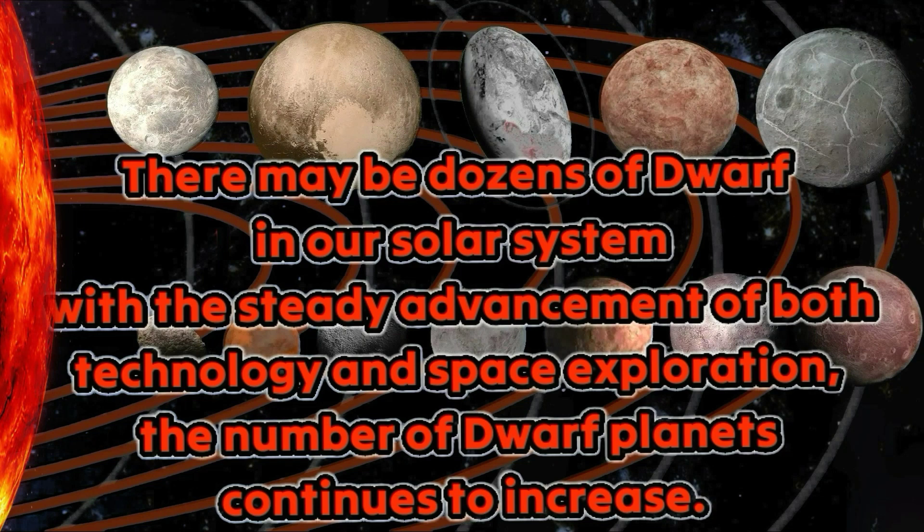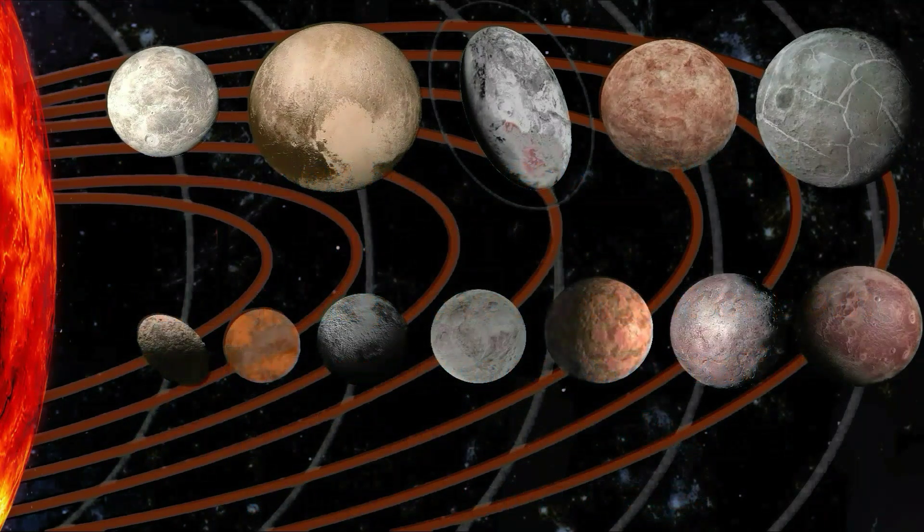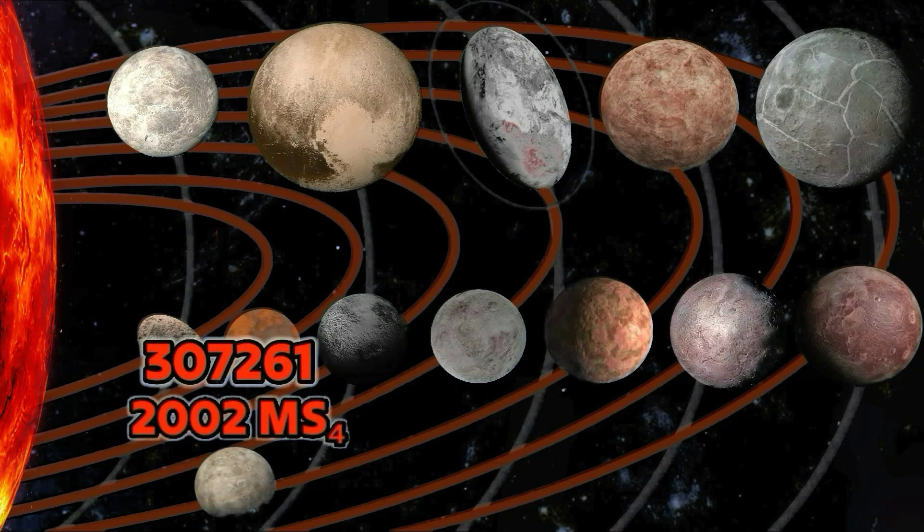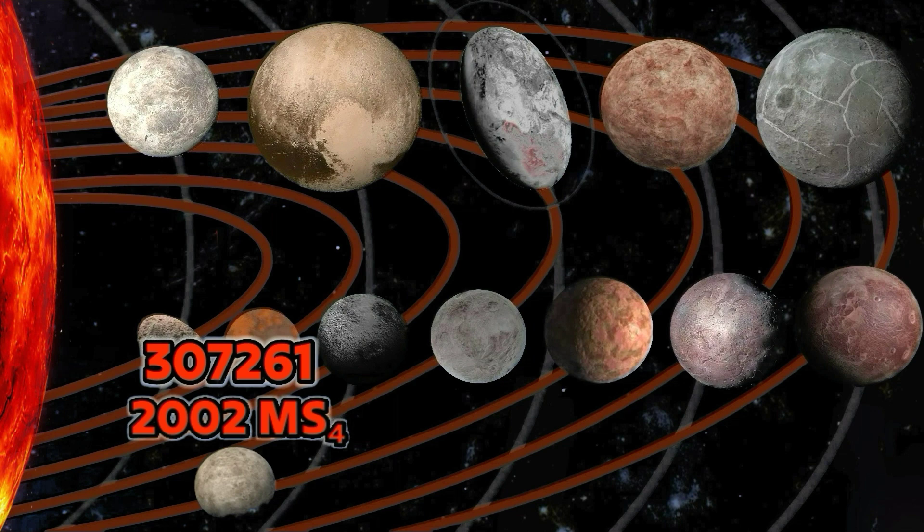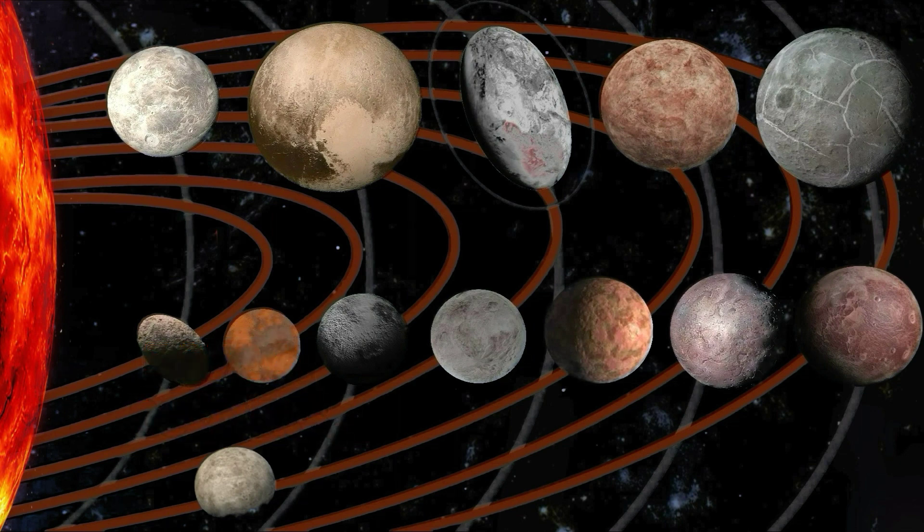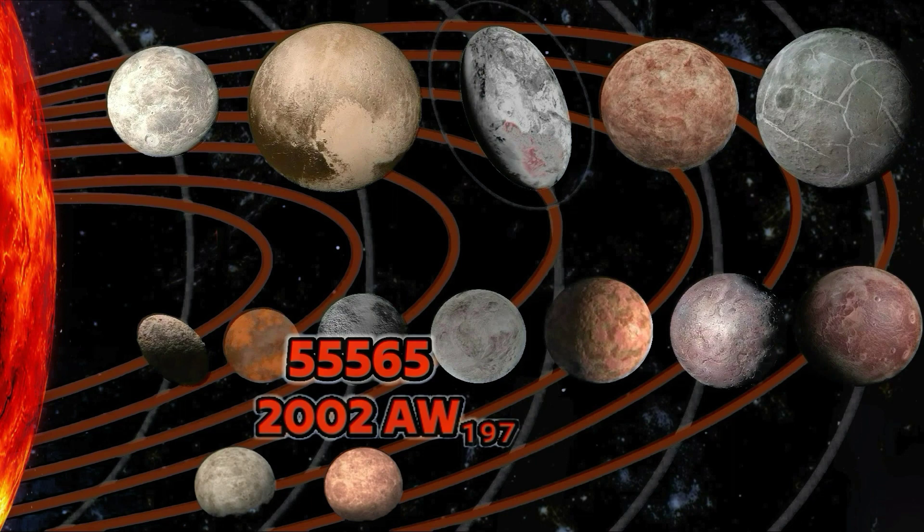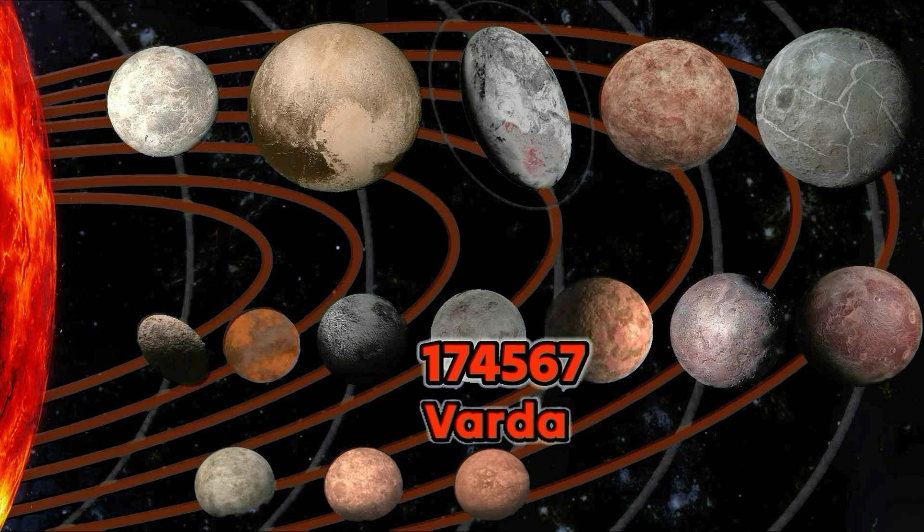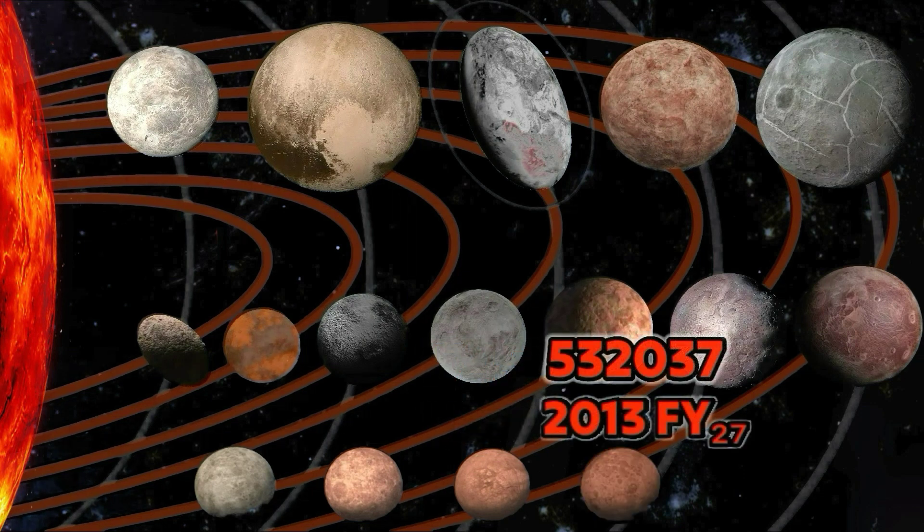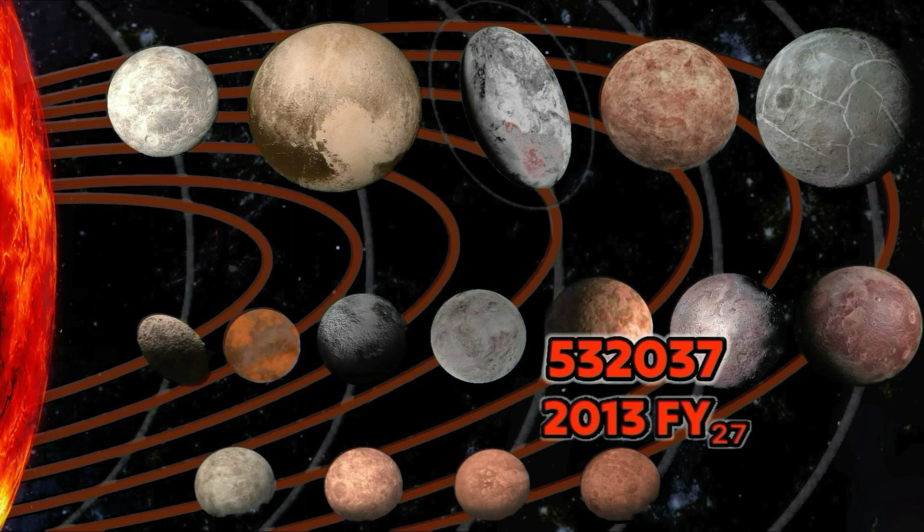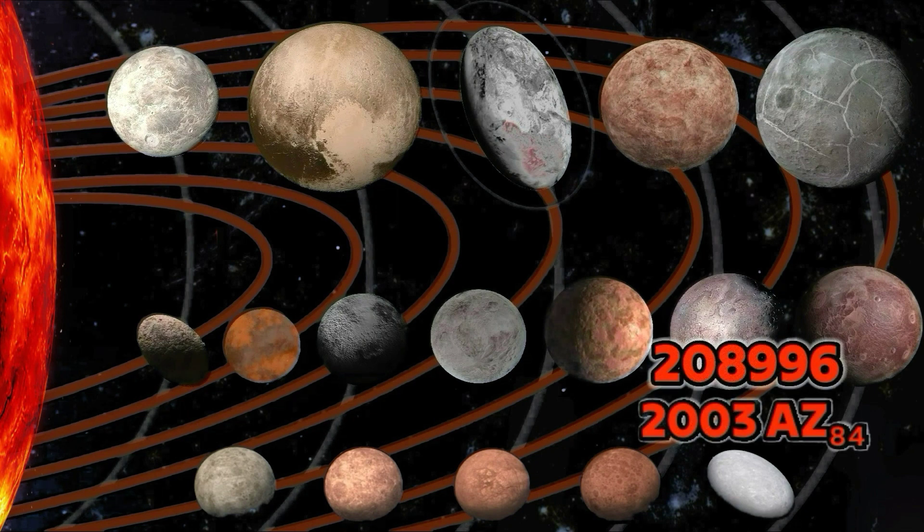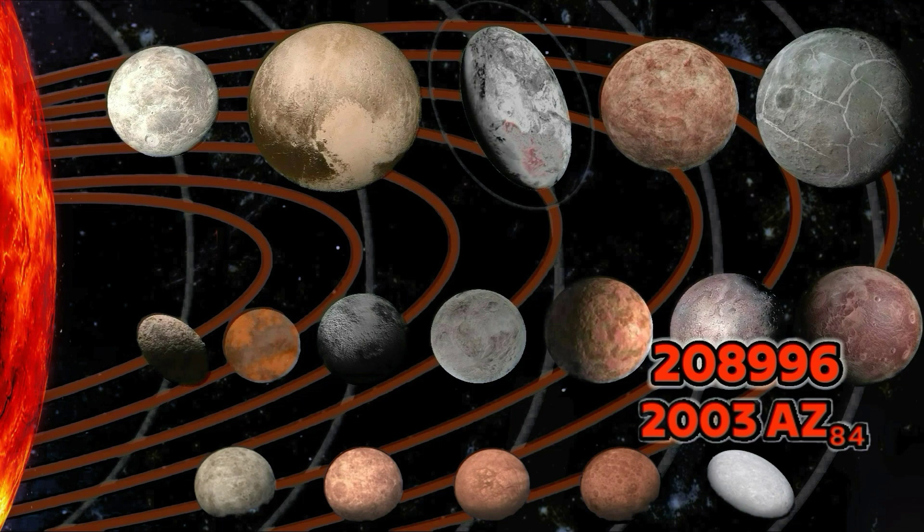The astronomers have discovered five potential dwarf planets: 307261, 2002 MS4, 55565, 2002 AW197, 174567 Varda, 532037, 2013 FY27, 208996, 2003 AZ84.